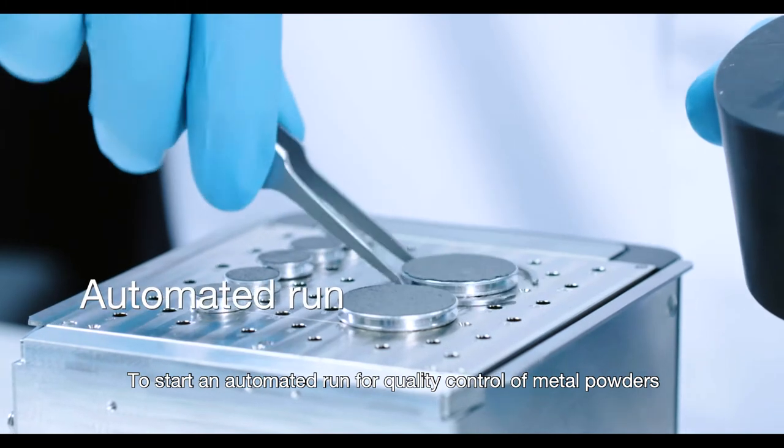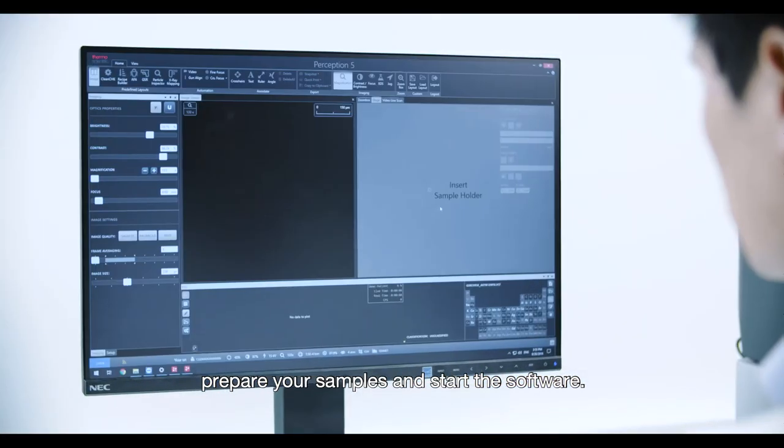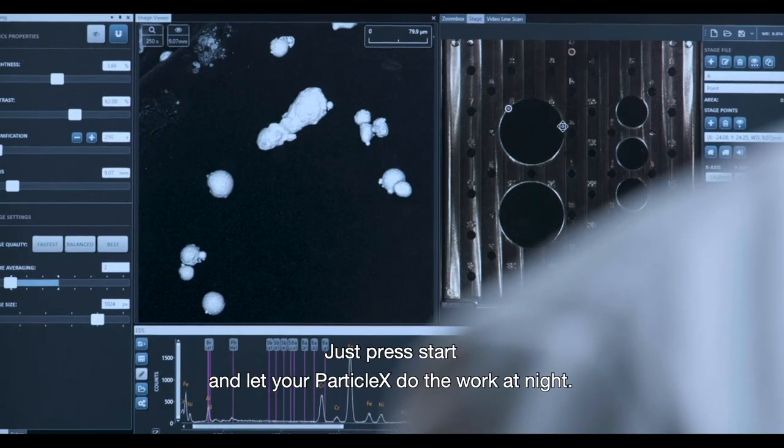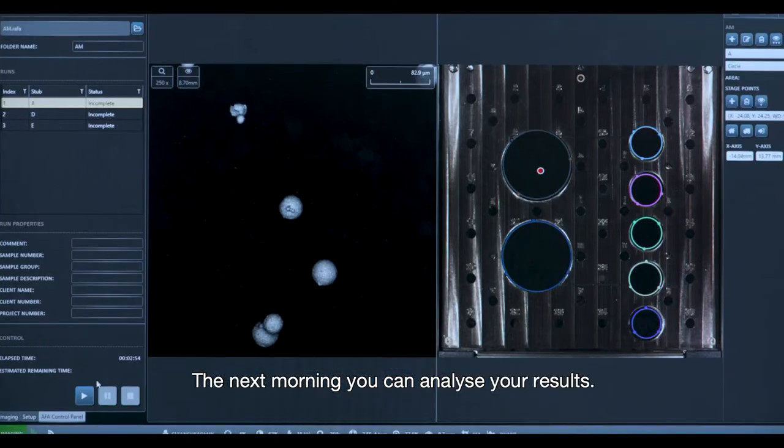To start an automated run for quality control of metal powders, prepare your samples and start the software. Customize your recipe for more in-depth investigation, just press start, and let your Particle X do the work at night.